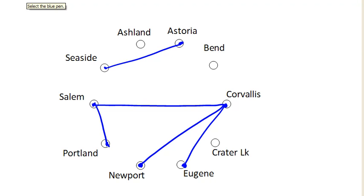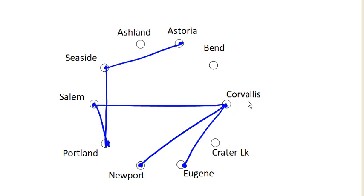Instead, we move on to the next cheapest, which was Portland to Seaside — so we'll connect Portland to Seaside. Continuing on, the next cheapest is Newport to Salem, but that would create a circuit, so we're not going to do it. Next cheapest is Corvallis to Portland, but that would also create a circuit. How about Eugene to Newport? Nope, that would create a circuit.